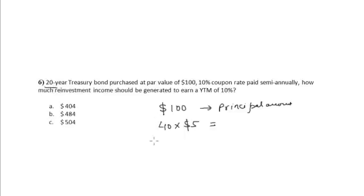So total 40 semi-annual coupons are received and each coupon value is $5. Hence the total amount received through interest is equal to $200.